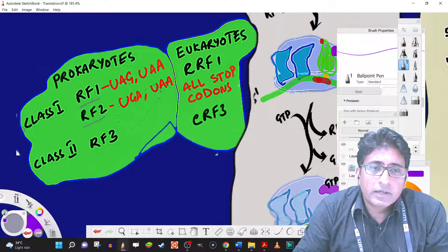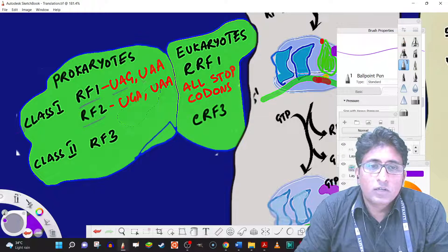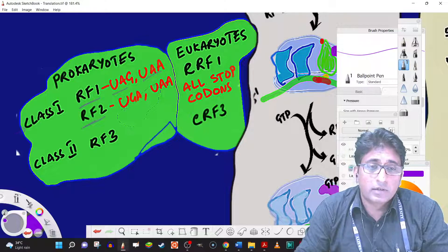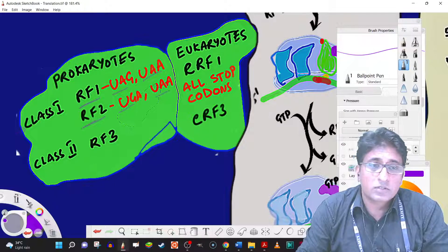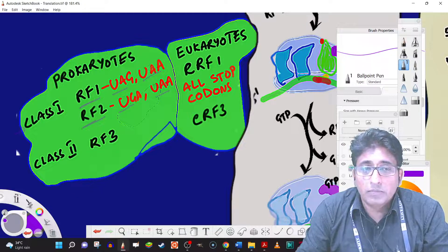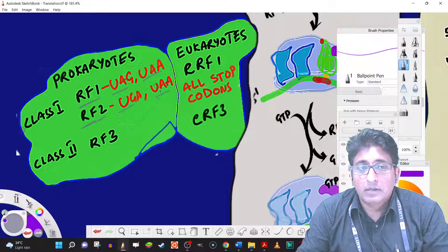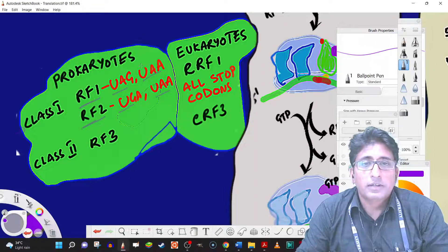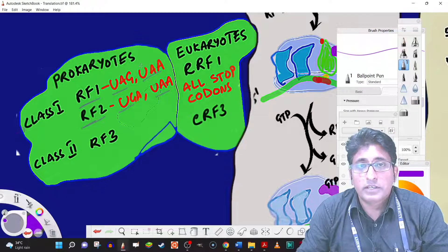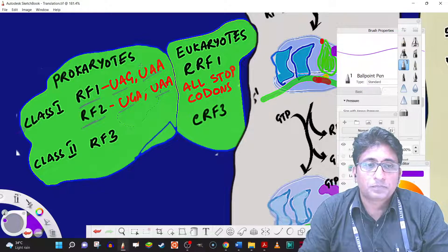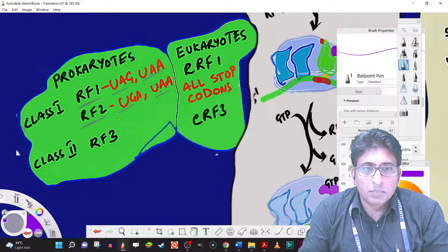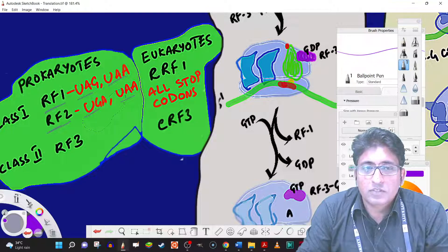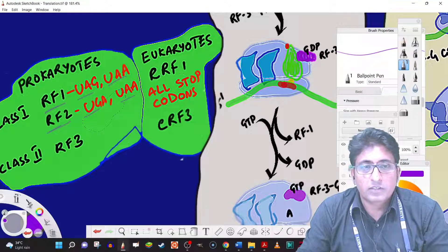RF1 recognizes UAG and UAA stop codons. And RF2, this is in prokaryotes, recognizes UGA and UAA. So basically, UAA can be recognized by RF1 and RF2. And UAG can only be recognized by RF1 release factor. And UGA can only be recognized by RF2. Eukaryotes is simpler in the sense that all the stop codons are recognized by ERF1.